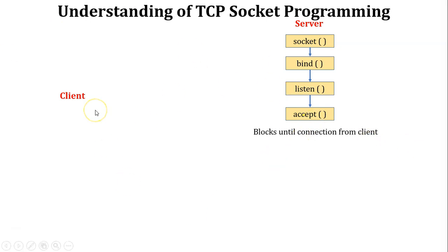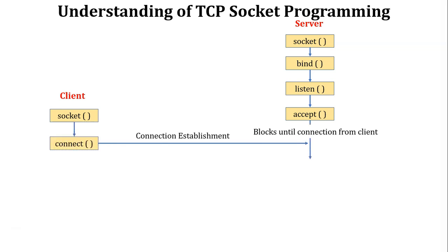At the client side, first you write the socket function to create a socket, then write the connect function. Using connect, the client tries to connect to the server port. After receiving the connection request, the accept function is executed at the server side, meaning the connection is established between the client and server.